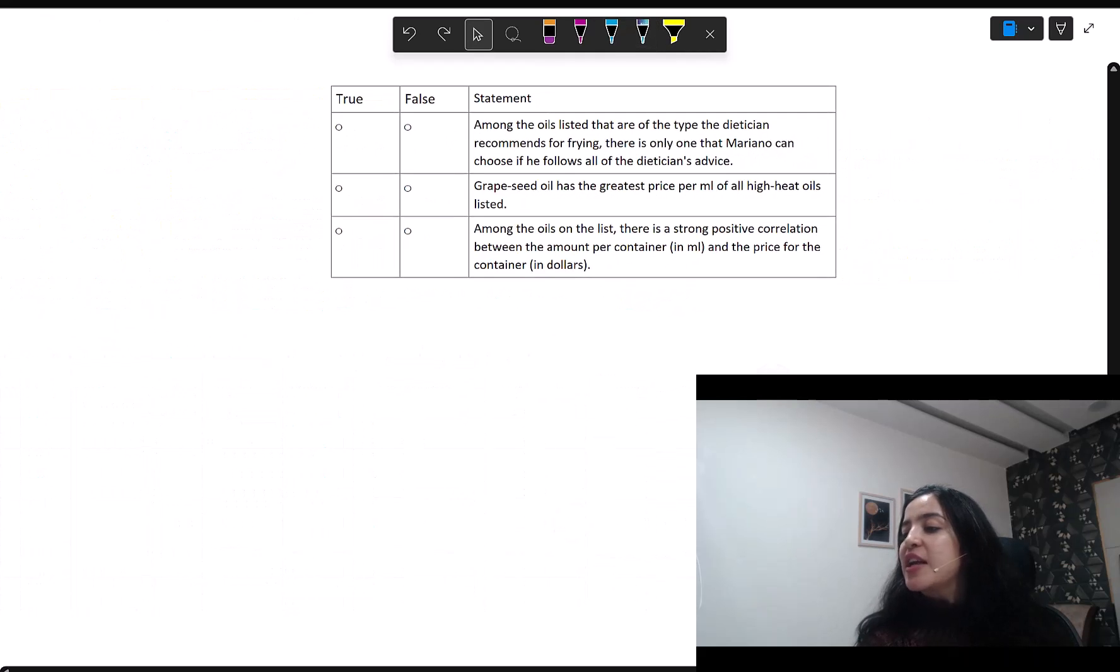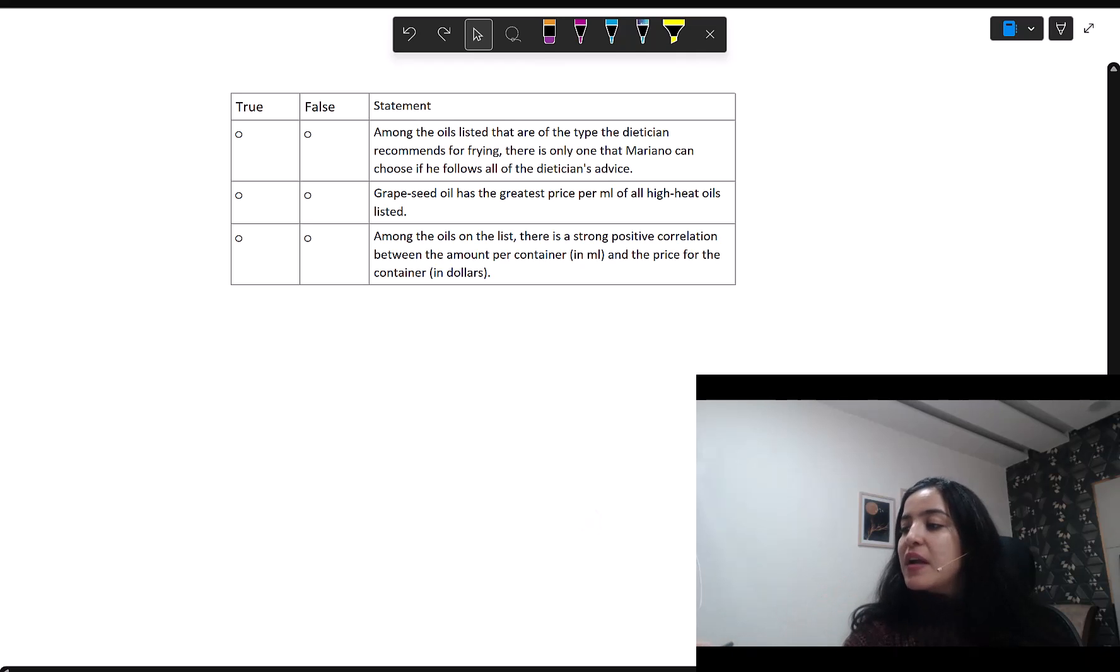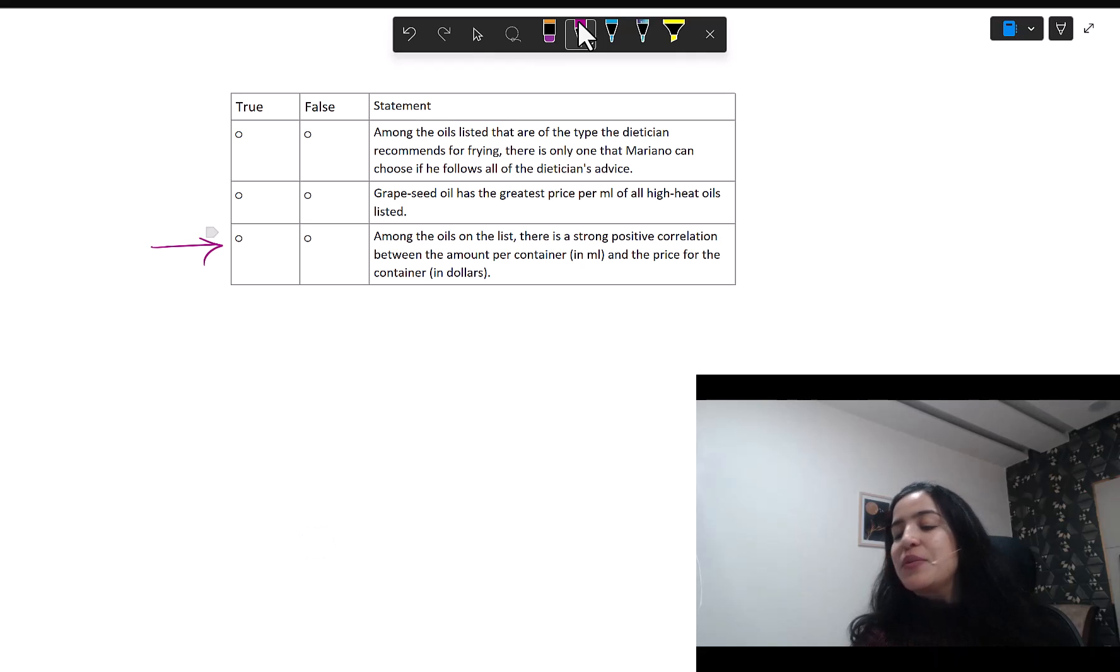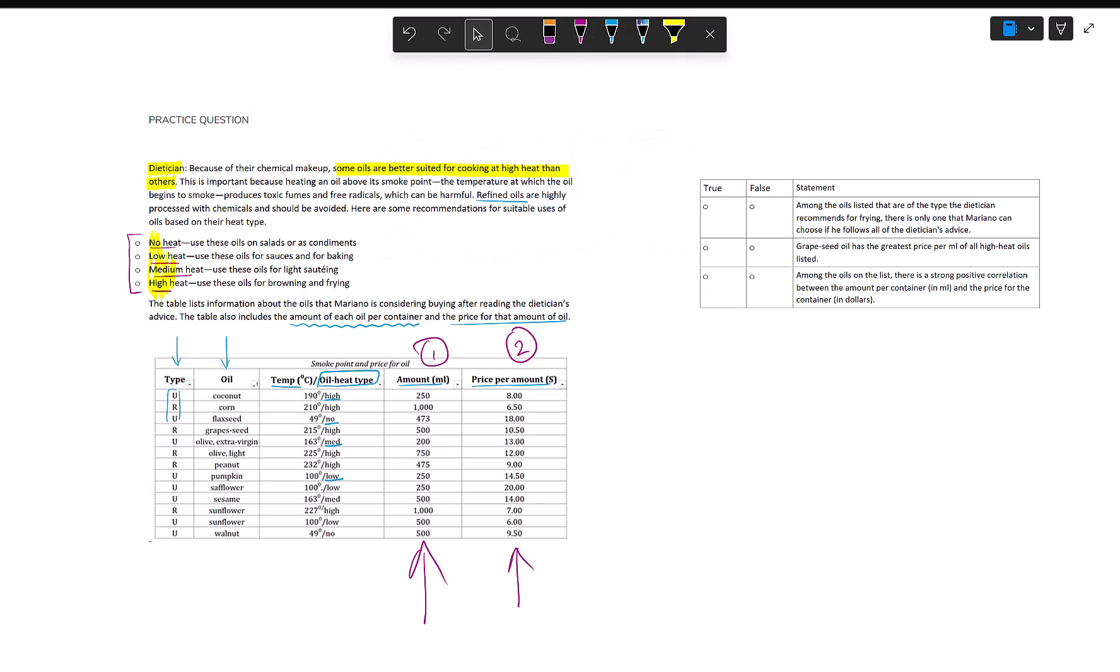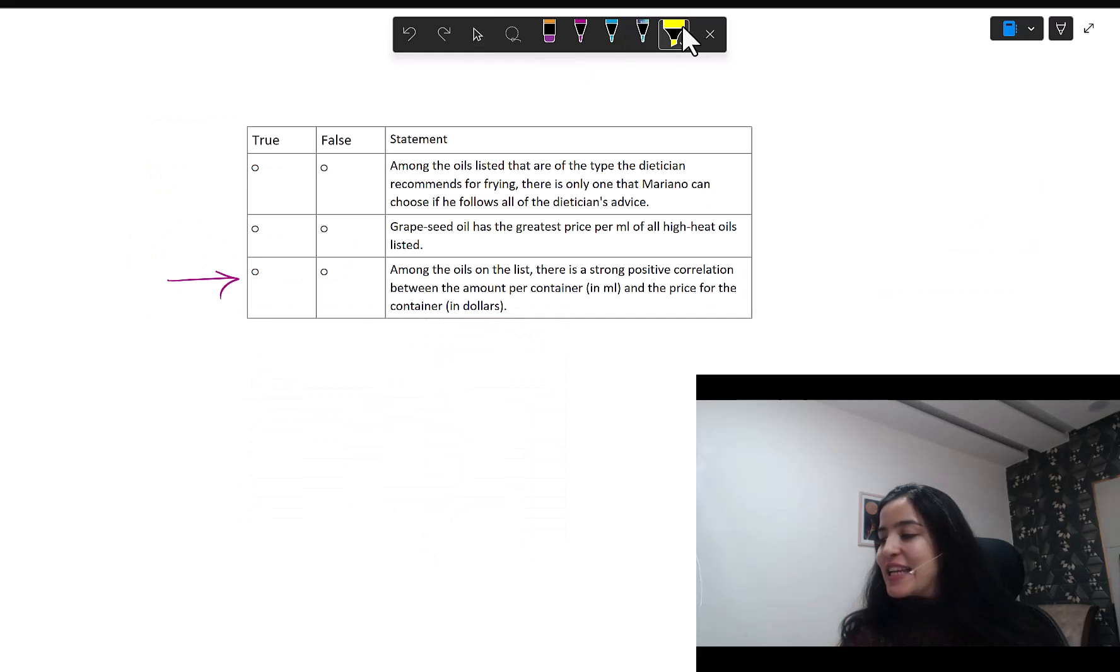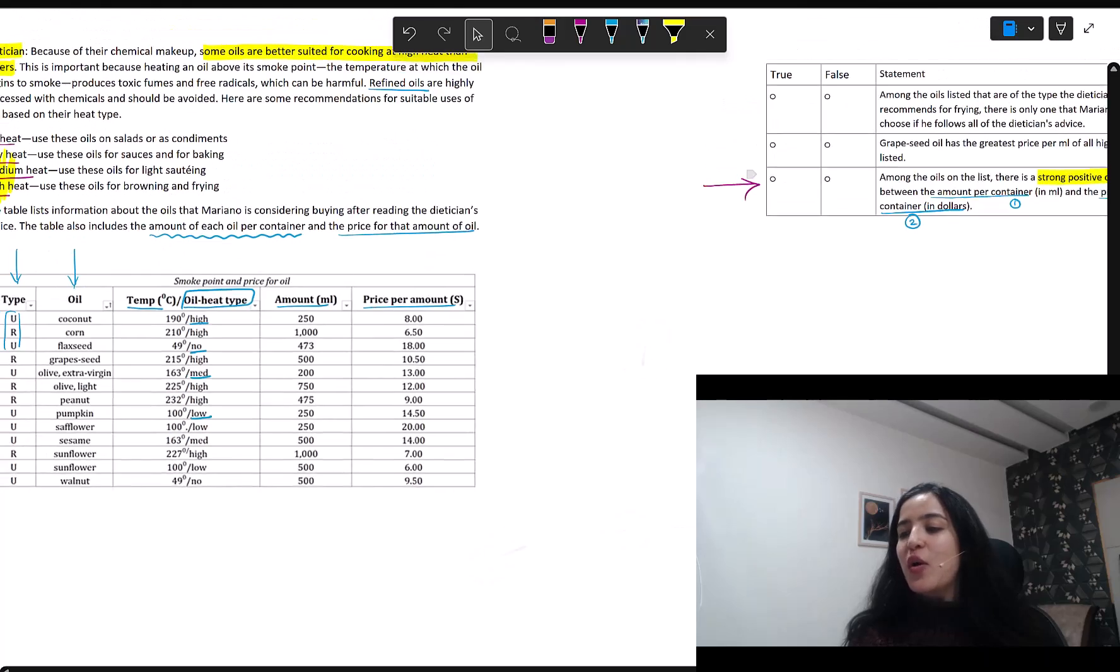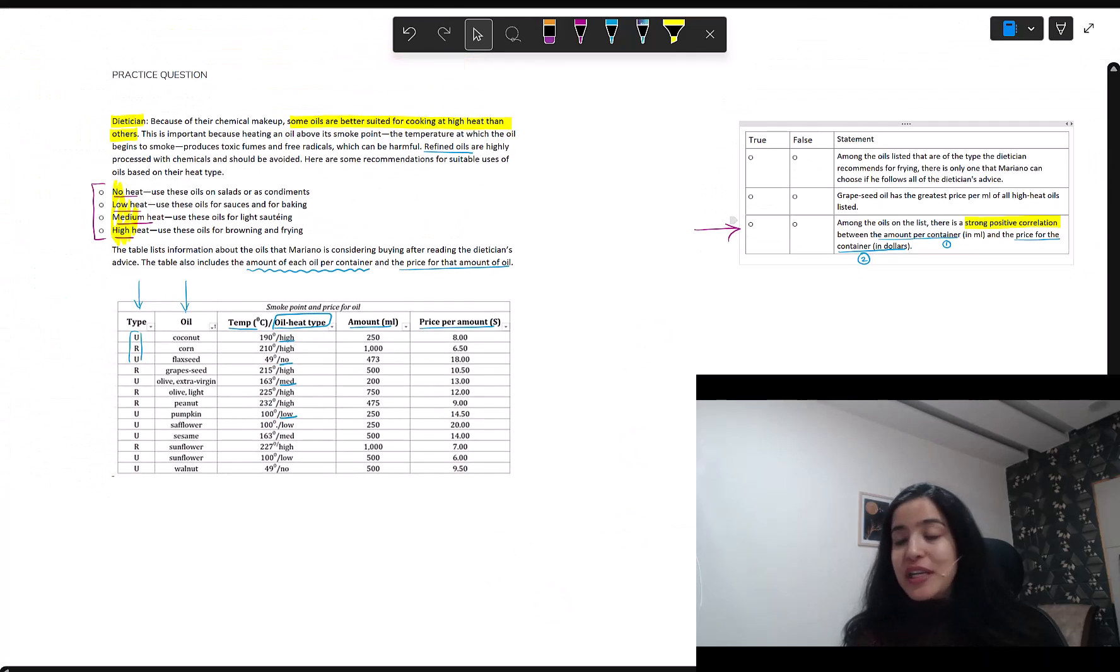And now, here is your question. There are three statements, but the one that is connected with correlation, the idea we are trying to learn here, is statement three. Just pause your video and try only statement three. Now, you see, this statement is talking about strong positive correlation between two things. Thing one is the amount per container in ml and thing two is the price for the container in dollars. These are the two things between which we need correlation. We'll go to the table and see which are the columns that make sense, which are really being talked about here.